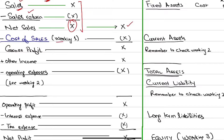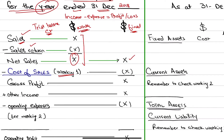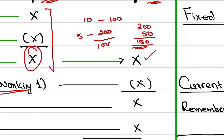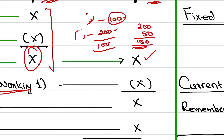Then we go to cost of sales — we need to see working number one. The basic concept of cost of sales is: what is the value of what you have sold? For example, I bought 10 pencils for 100. I sold 5 pencils for 200. What is the profit? The cost of the 5 pencils I sold is 50, so the profit is 150. You have to match the units sold with the correct cost to compute the profit.